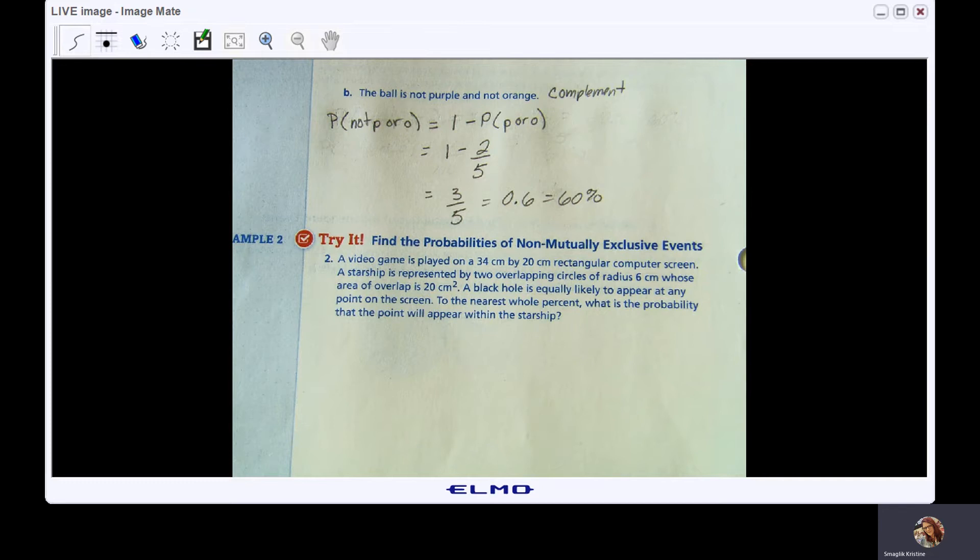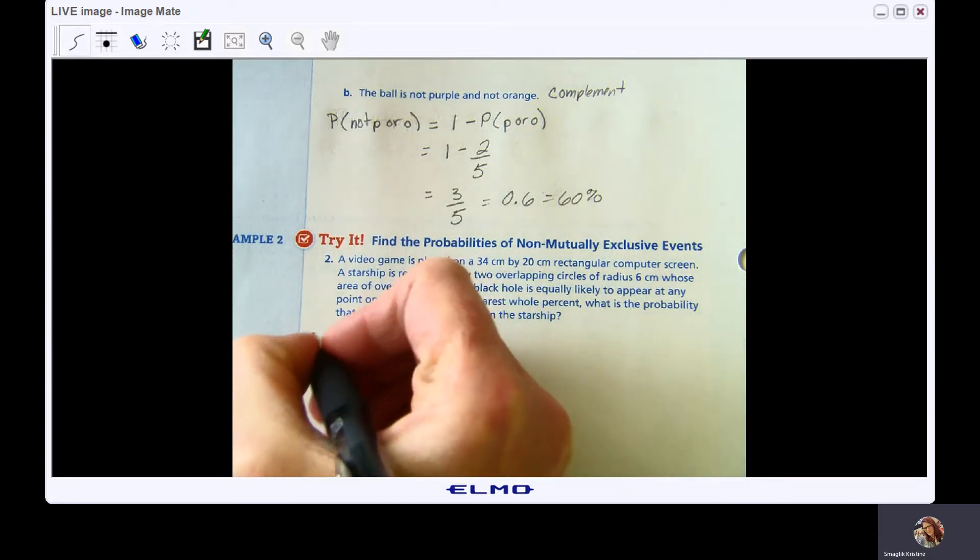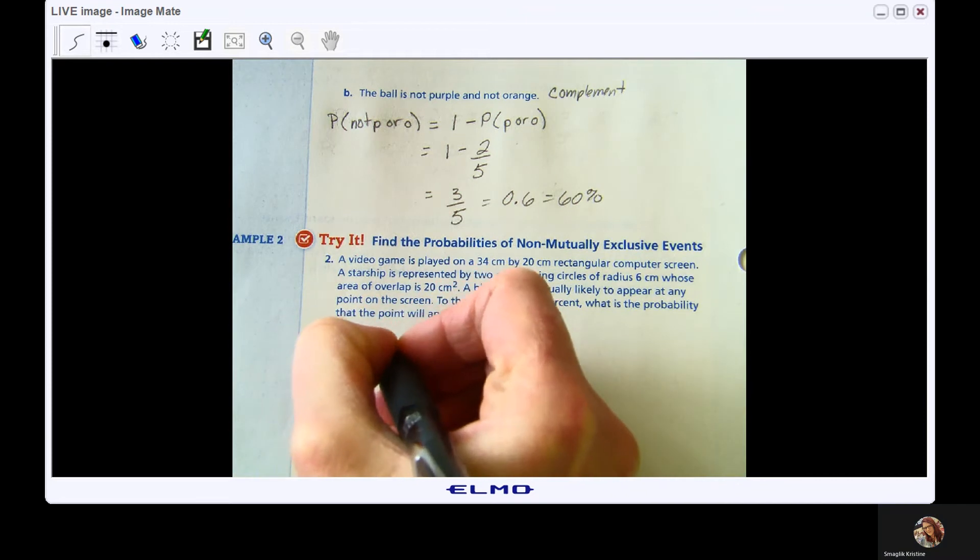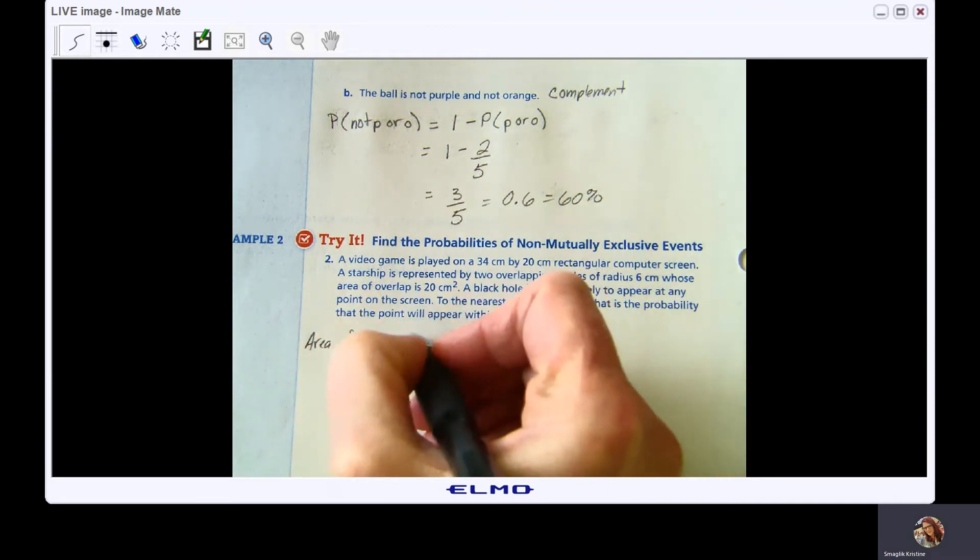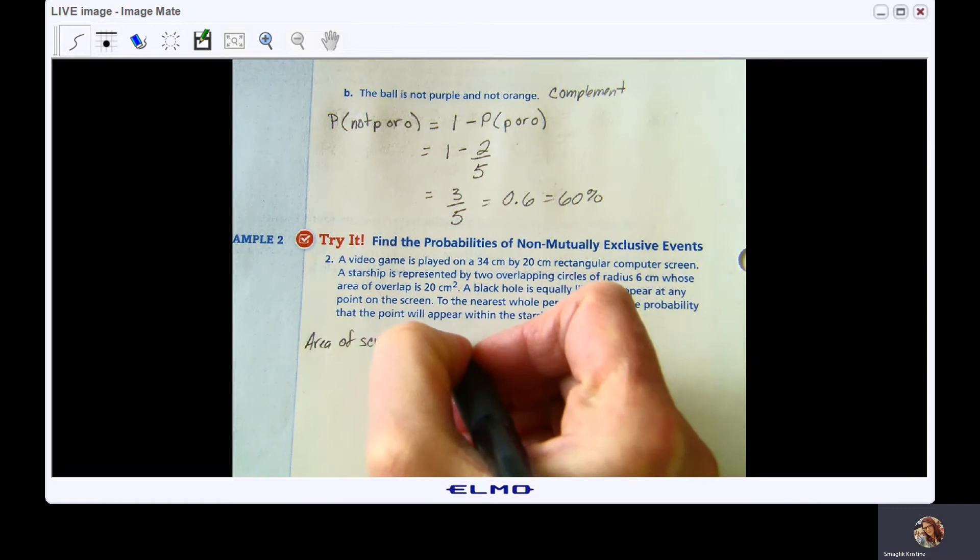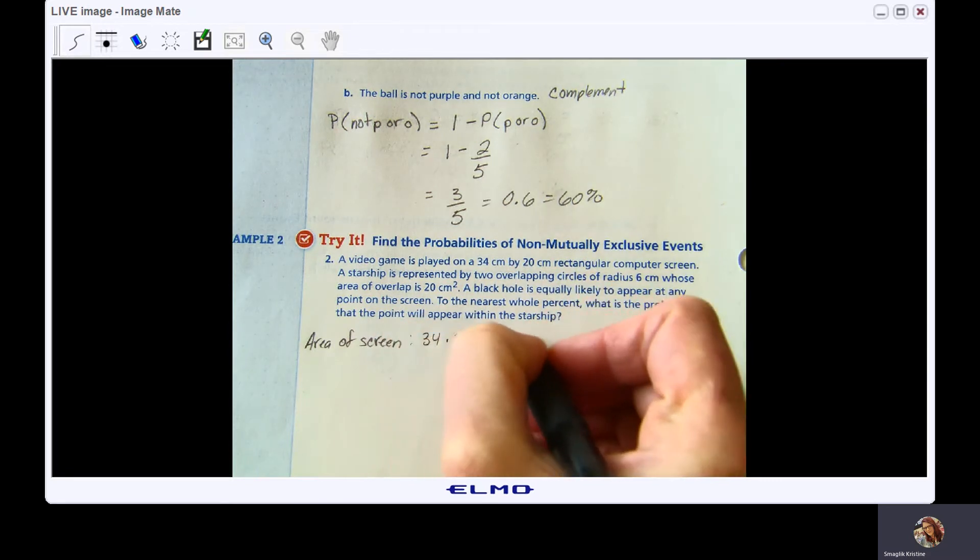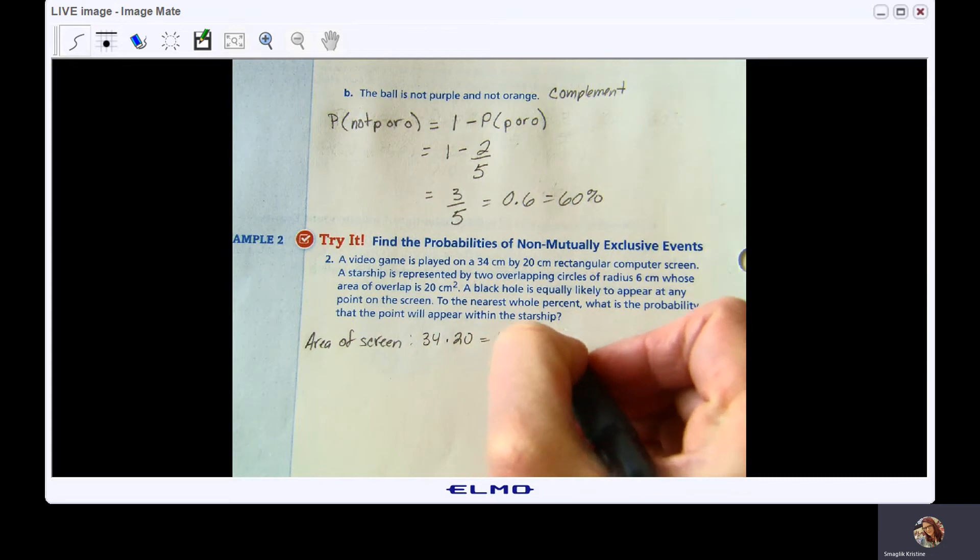I am not a fan of them having you guys calculate a lot of area. We're just going to go through it. You will not see something like this on a test. I'm going to give you the area and then let's work with it. So the area of the screen is going to be 34 times 20, and that was centimeters. So the area of the screen is 680 cm squared.